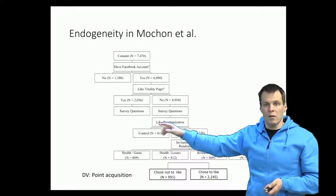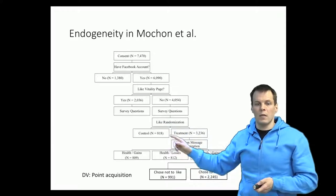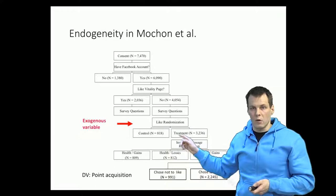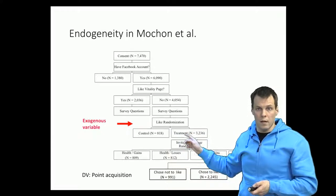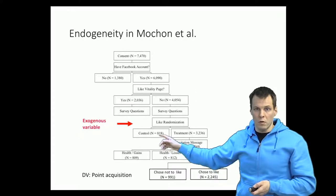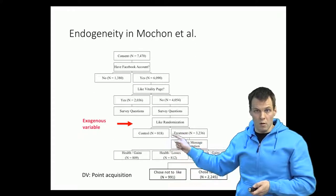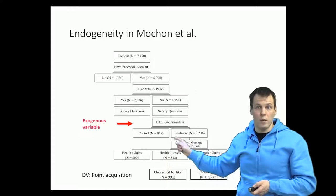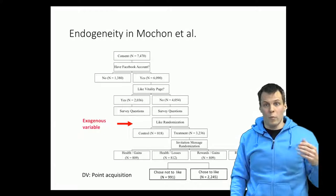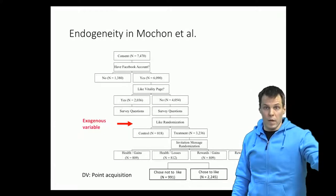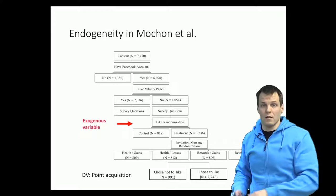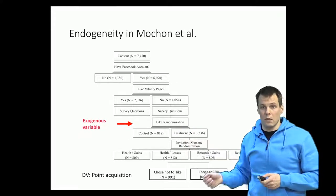They ran an experiment with a randomization step. They invited some people to like the page they were studying while the rest were the control group. This randomization is exogenous because there is no reasonable way that a random number generated by a computer would be correlated with the actual behavior of people. So it is very implausible that this randomization would not be exogenous.